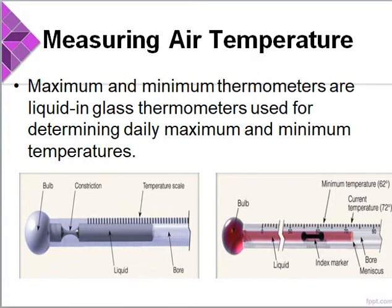As the air warms, the alcohol expands and moves freely up the tube past the stationary index marker. Because the index marker does not move as the air warms, the minimum temperature is read by observing the upper end of the marker. To reset a minimum thermometer, simply tip it upside down — this allows the index marker to slide to the upper end of the alcohol column indicating the current air temperature. The thermometer is then remounted horizontally so that the marker will move toward the bulb as the air temperature decreases.